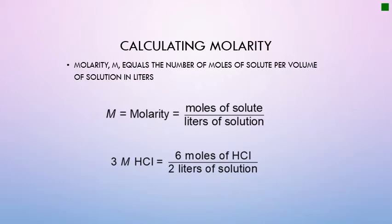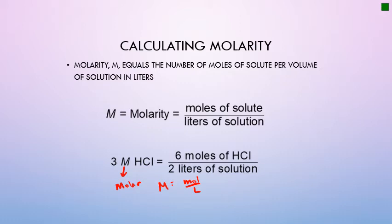The next concentration type is molarity, symbolized as capital M, which equals the number of moles of solute per liter of solution. This is the most important form of concentration in chemistry. For example, dissolving 6 moles of HCl in 2 liters of solution gives a 3 molar solution. Molarity can be used in dimensional analysis just like molar mass, Avogadro's number (6.02 × 10²³ particles/mol), or the molar volume of a gas (22.4 L/mol), and applies to solids, liquids, or gases.